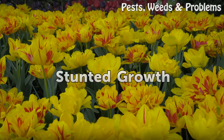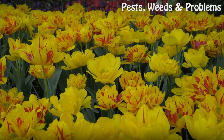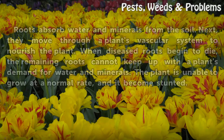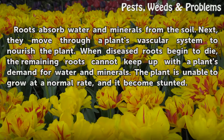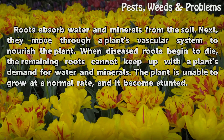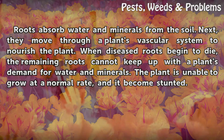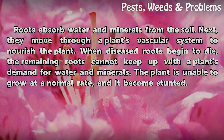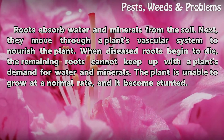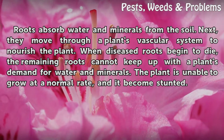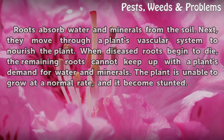Stunted growth: roots absorb water and minerals from the soil, then move them through a plant's vascular system to nourish the plant. When diseased roots begin to die, the remaining roots cannot keep up with the plant's demand for water and minerals. The plant is unable to grow at a normal rate and it becomes stunted.